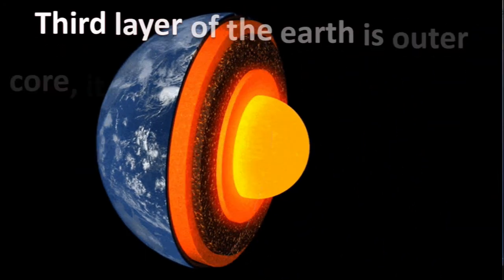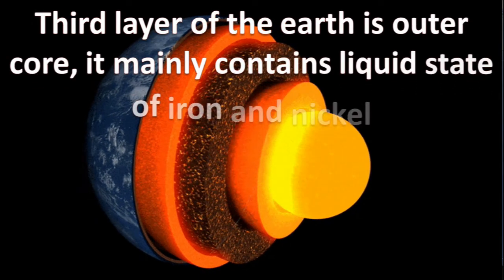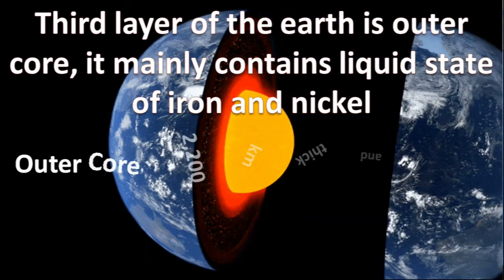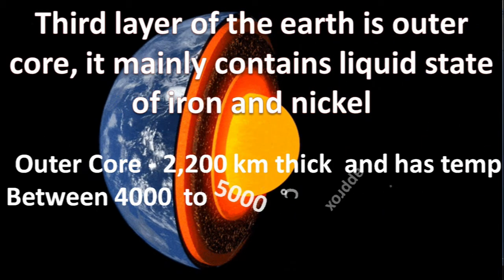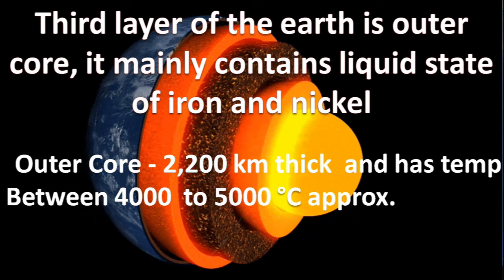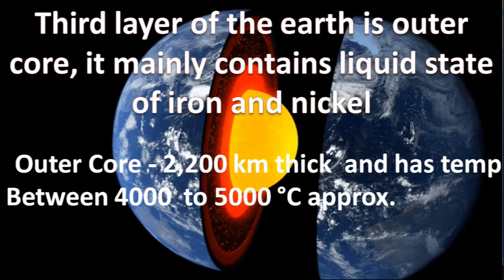Third layer of the earth is outer core. It mainly contains liquid state of iron and nickel. Outer core having thickness 2,200 km and has temperature between 4,000 to 5,000 degrees Celsius approximately.